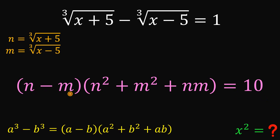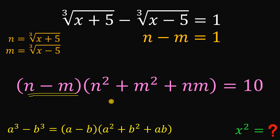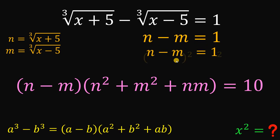The question is: do we know the value of n minus m? The answer is yes, because from the given equation, n minus m must be equal to 1. So we know the value of n minus m. The next question is: can we find the value of n squared plus m squared? And the answer is also yes.